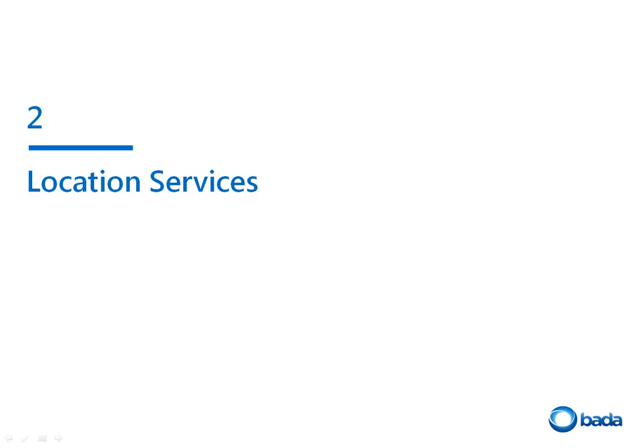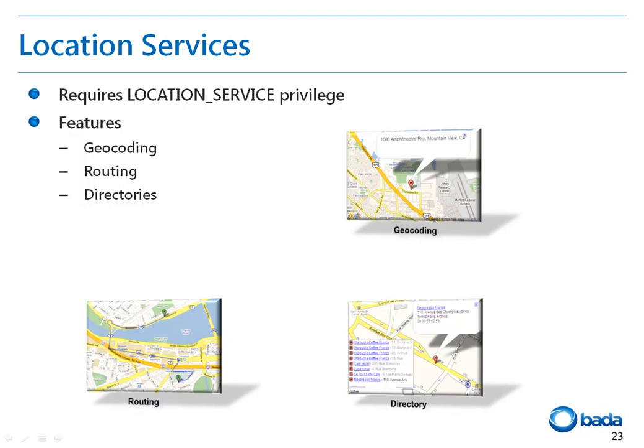That is all for the first namespace, Locations. Now let's move on to the next namespace, Location Services. Location Services provide location-based services such as geocoding, routing, and directory searches. The privilege required for using Location Services APIs is called location_service. The geocoding service helps to convert street addresses into coordinates and vice versa. The routing service allows your application to determine the route between two locations and implement navigation features. The directory service allows applications to perform geographically constrained searches for any data such as places, products, and services.